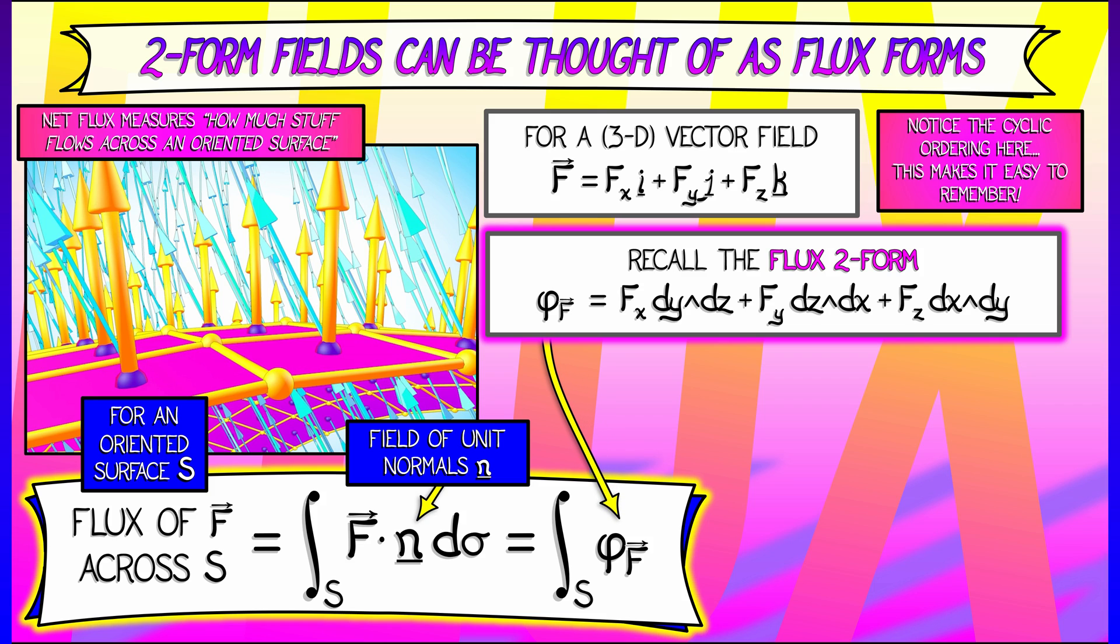Now, if you want to write this in terms of forms, it's so much nicer. You're simply integrating the flux 2-form of F over S.